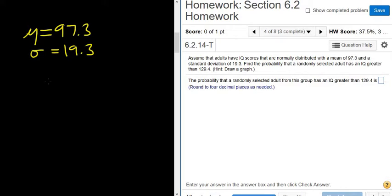Find the probability, so I'm going to go ahead and write the big P for probability, that a randomly selected adult has an IQ, we'll let x be the IQ, greater than 129.4.